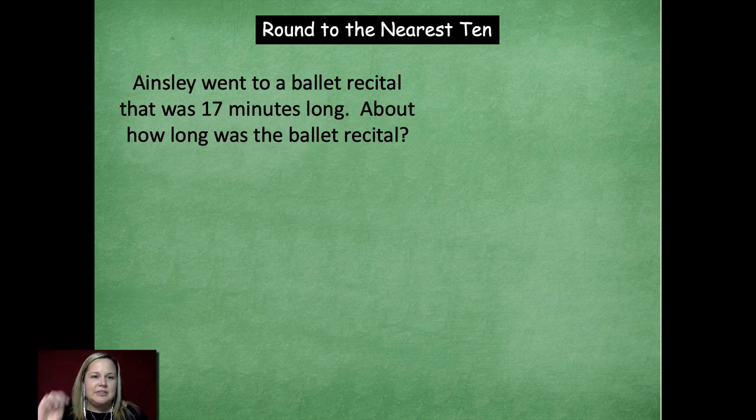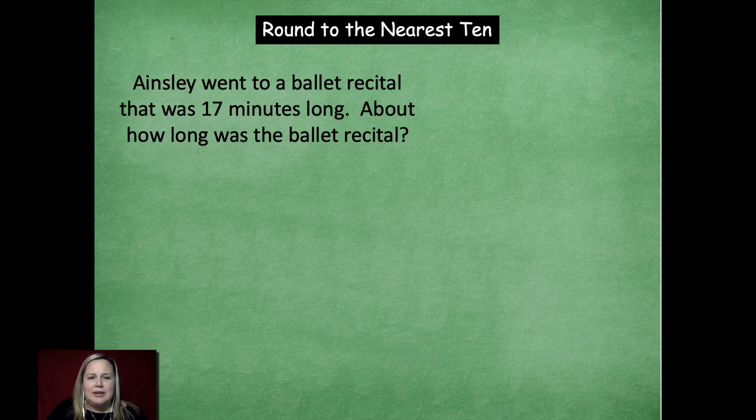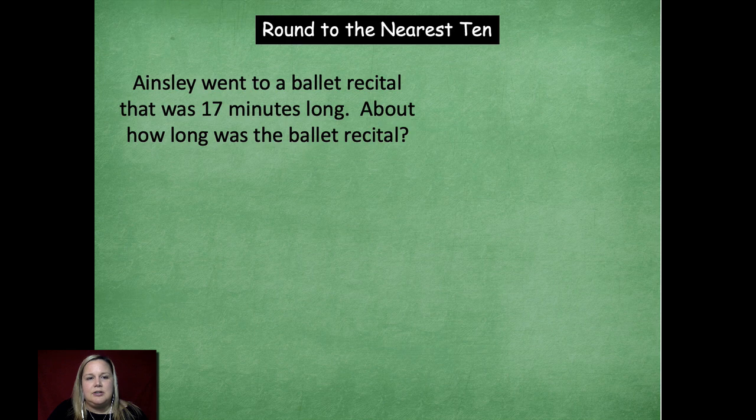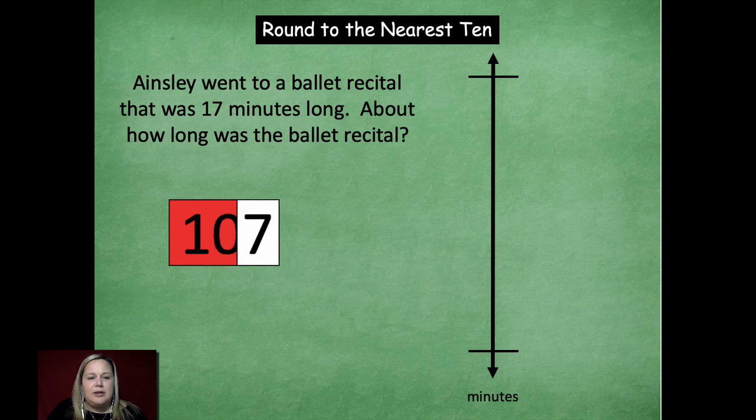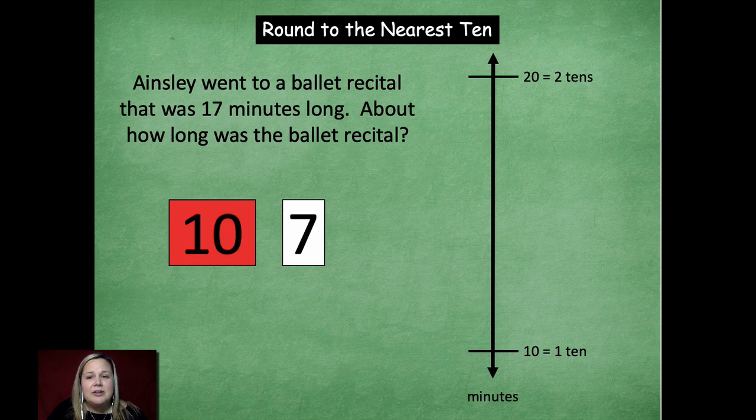So here's our first problem. It says Ainsley went to the ballet recital that was 17 minutes long. About how long was the ballet recital? So when you see that word about, remember that's telling you that you're rounding to the nearest ten. Okay, so here's my vertical number line. We have our starting point and our end point. We know that there's one ten in 17, so that's going to give us one ten. Okay, then we know that one ten more is two tens which is twenty.